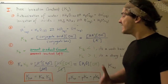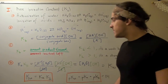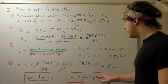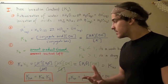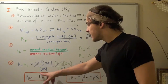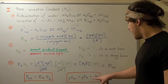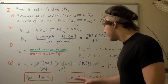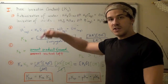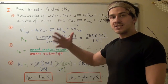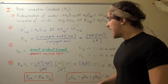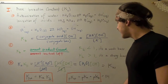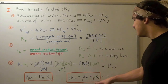Now, what happens if we take the log of both sides? We get pKw equals pKa plus pKb. Remember, according to the laws of logs, when we take the log of a product, it becomes addition. And pKw equals 14. If you're not sure how I got from Ka × Kb = Kw to this, check out the video below where I talk about the laws of logs. So our end result is that 14 equals pKa plus pKb.